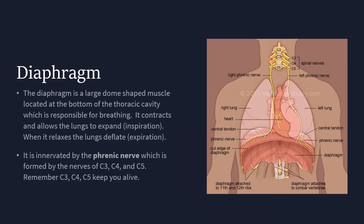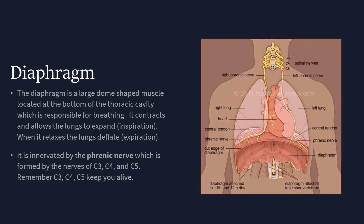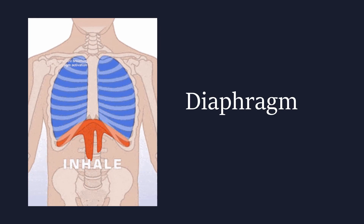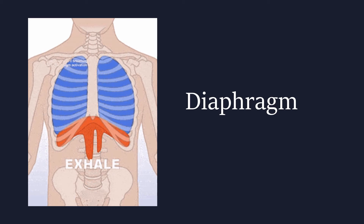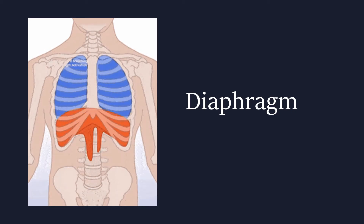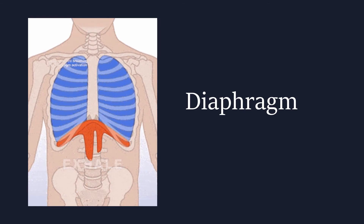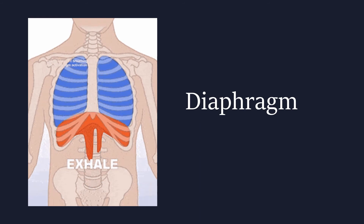You can see the phrenic nerve coming off C3, C4, and C5, running on either side of the pericardium to innervate the diaphragm. When the diaphragm contracts, you inhale. When the diaphragm relaxes, you exhale.